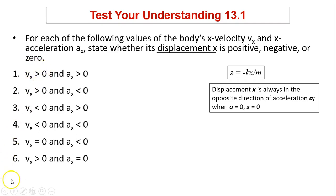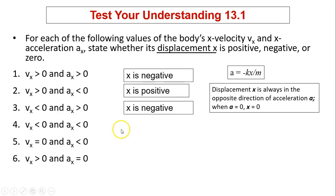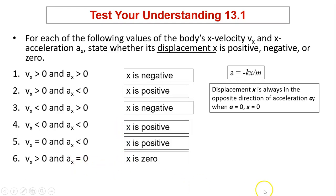So for the first one, it doesn't matter what your v is. You just look at a. If a is greater than zero, x is less than zero. If a is less than zero, x is greater than zero. So the answers are: x is negative, positive, positive, and x equals zero because ax equals zero.